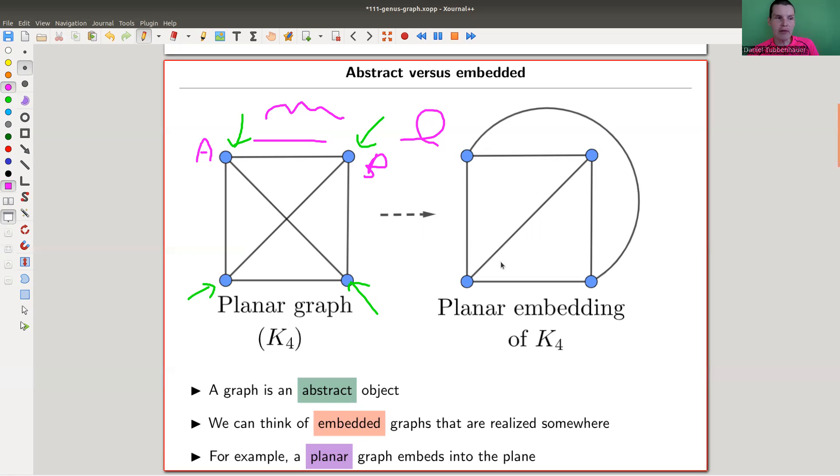Realizations can look very different. So here, those two graphs are the same, but the realization is different. This edge here is this edge in the other one. It connects the same vertices, so it's the same edge but drawn differently. That's called a realization.